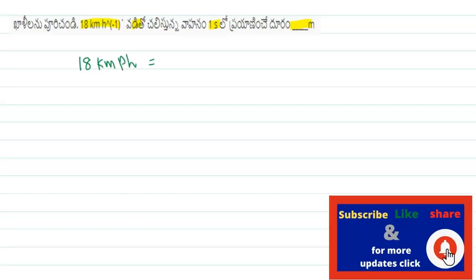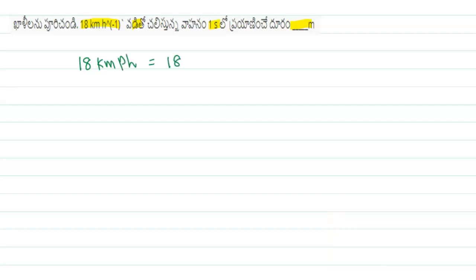If you want to convert in meters per second, the conversion factor is 5 by 18. So 5 by 18 — the 18 and 18 are cancelled. It is 5 meters per second.